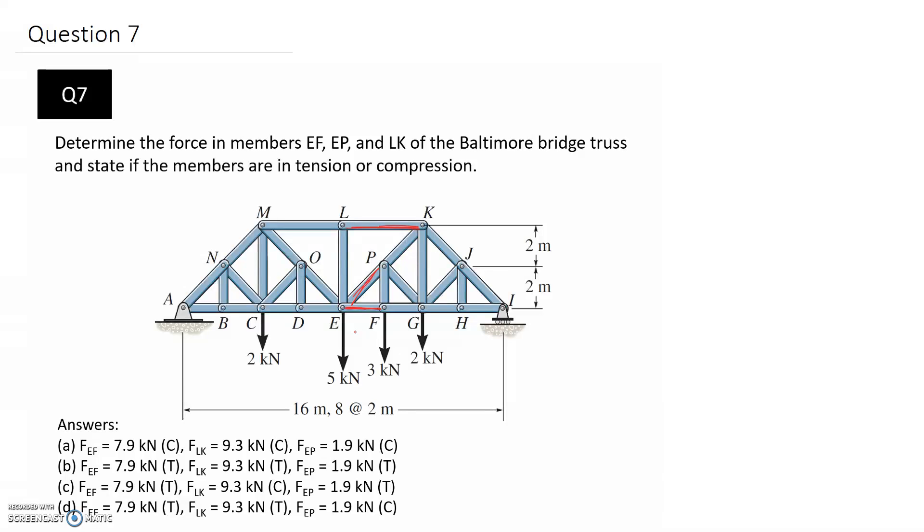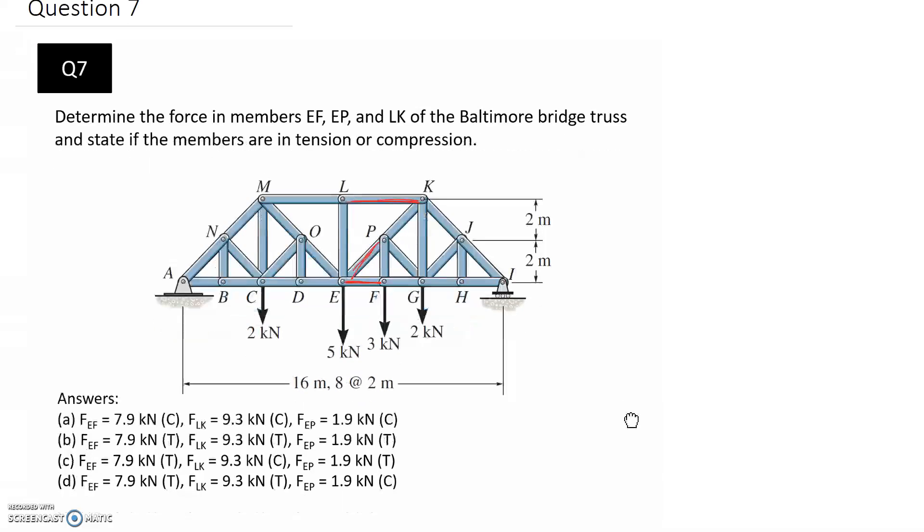In order to get to that point, the first thing we need to do is solve for at least one set of the reactions. When we take a cut through the truss here, we're going to need to redraw either the left hand side or the right hand side of the diagram. Whatever side we choose, we need to know what the reactions are. So let's draw our overall free body diagram.